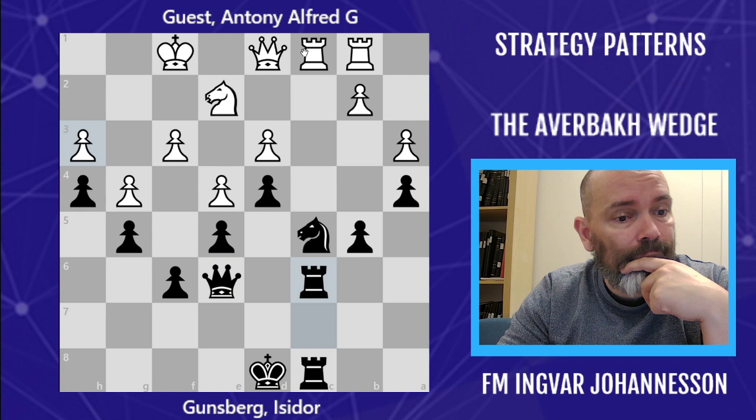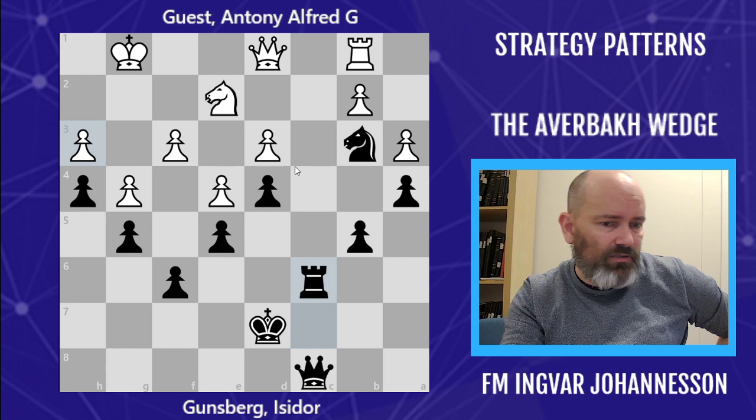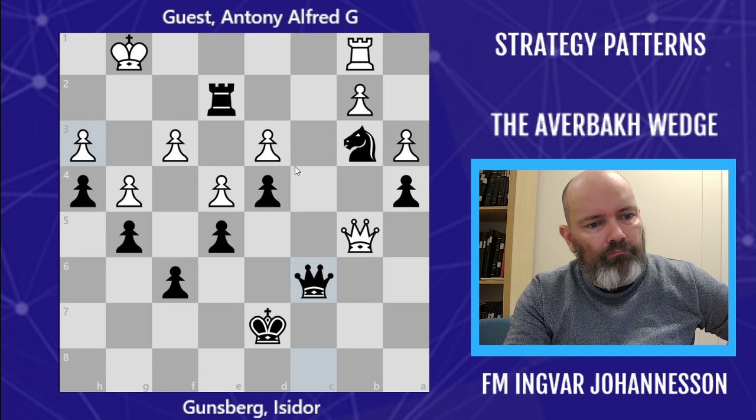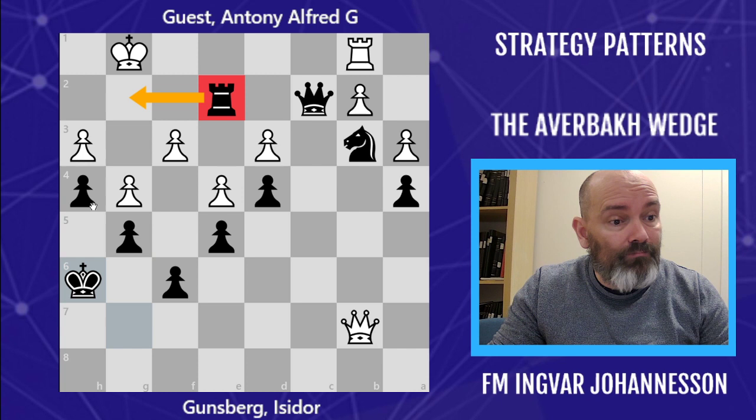Gunsberg tripled on the c-file. The c-file is Black's — he can put something on c2. White went for desperation but we just run with the king over to the kingside, the checks run out, and it's going to be mate. All made possible because of the Averbach Wedge.